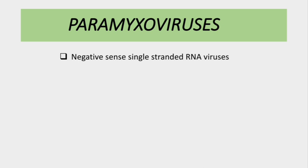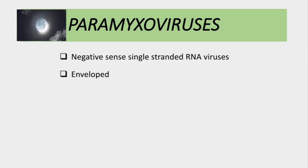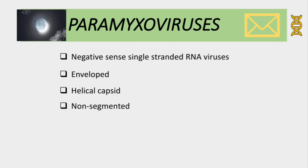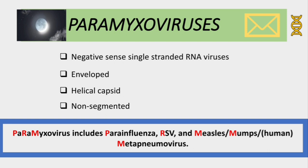Paramyxoviruses are negative sense single-stranded RNA viruses, represented using the moon symbol. They are enveloped viruses with a helical capsid — this is only for representation, not a DNA virus. These viruses are non-segmented, which means they are antigenically stable. In this family we have about five medically important viruses: parainfluenza, RSV, measles, mumps, and human metapneumovirus.